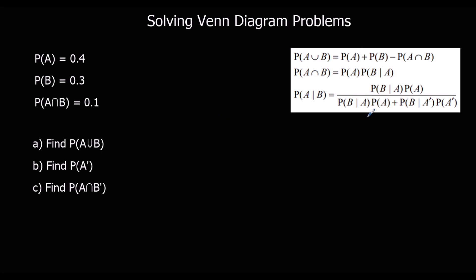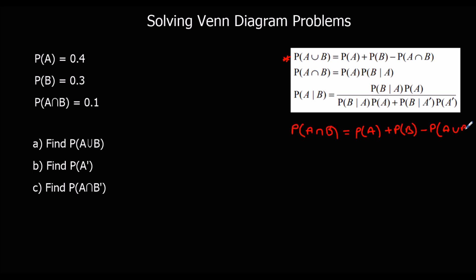There are some formulas given to us in the formula book. The main one I use is: the probability of A∪B equals the probability of A plus the probability of B minus the probability of A∩B. We can also rearrange it so that P(A∩B) equals P(A) plus P(B) minus P(A∪B).